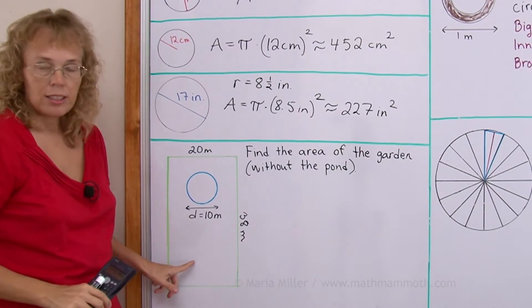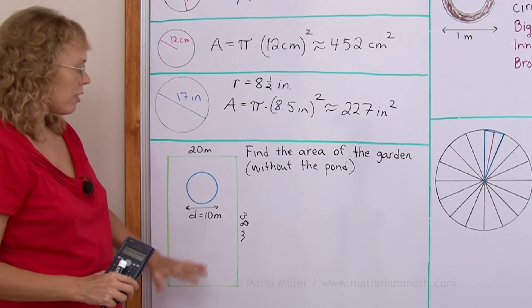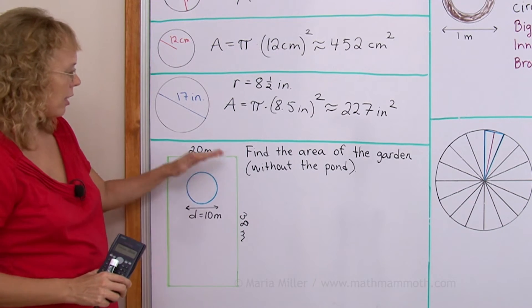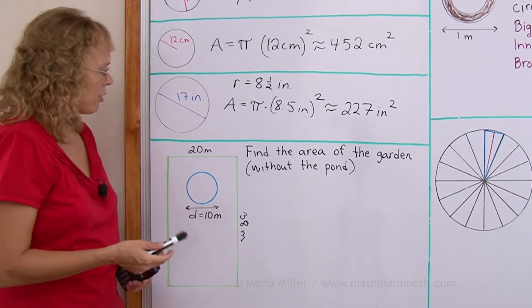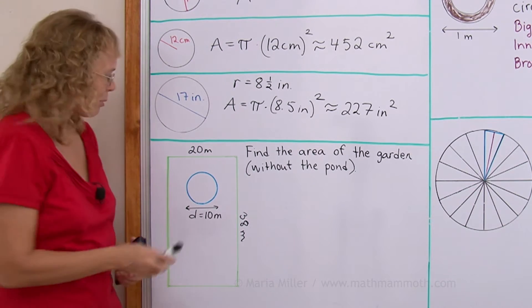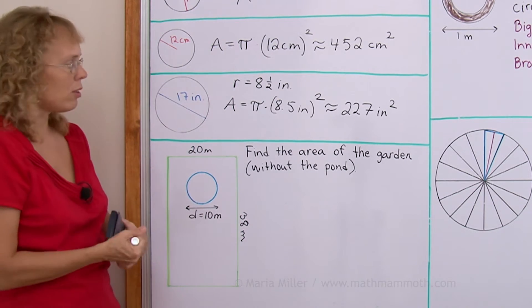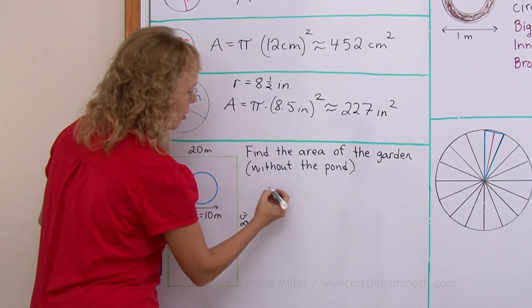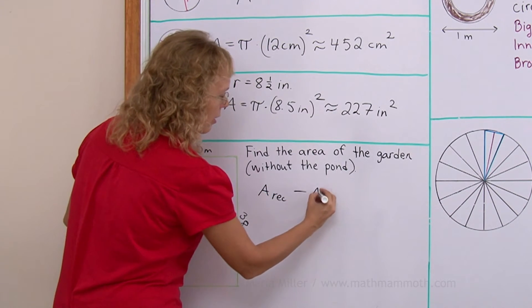Here's a garden, a rectangular garden. And inside it is a circular pond. We're gonna find the area of the garden without the pond. This area that has grass and plants growing on it. And of course, we find that by subtracting. We would get the area of the rectangle minus the area of the pond. So I'm gonna write here, area of the rectangle, take away area of the pond.